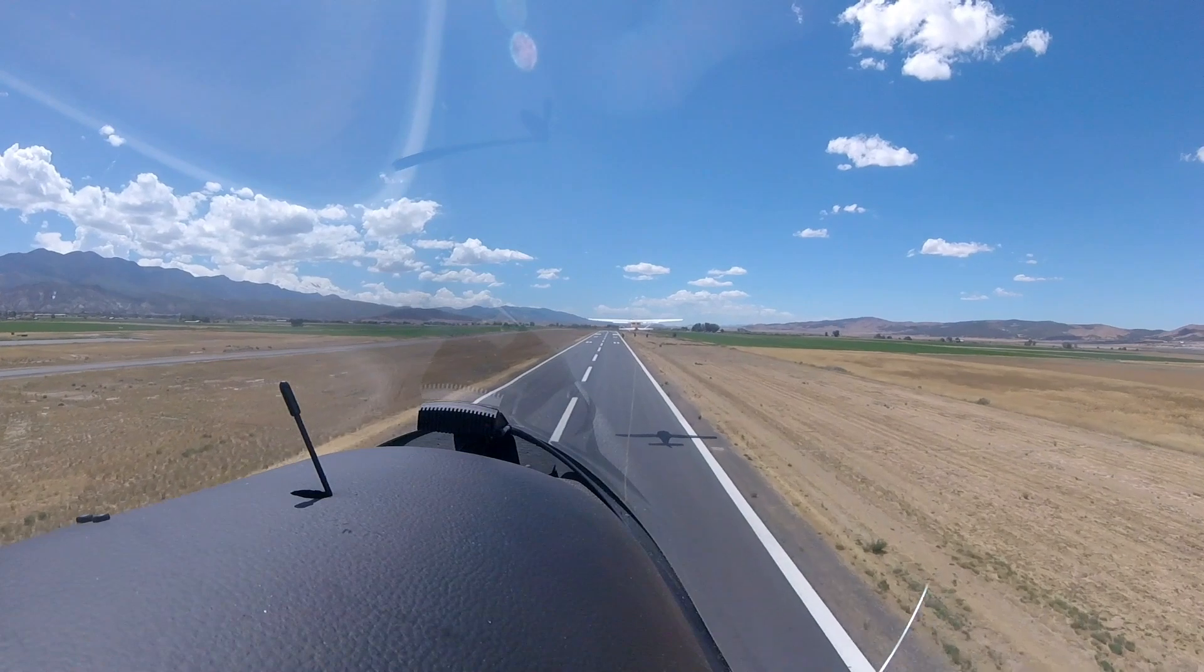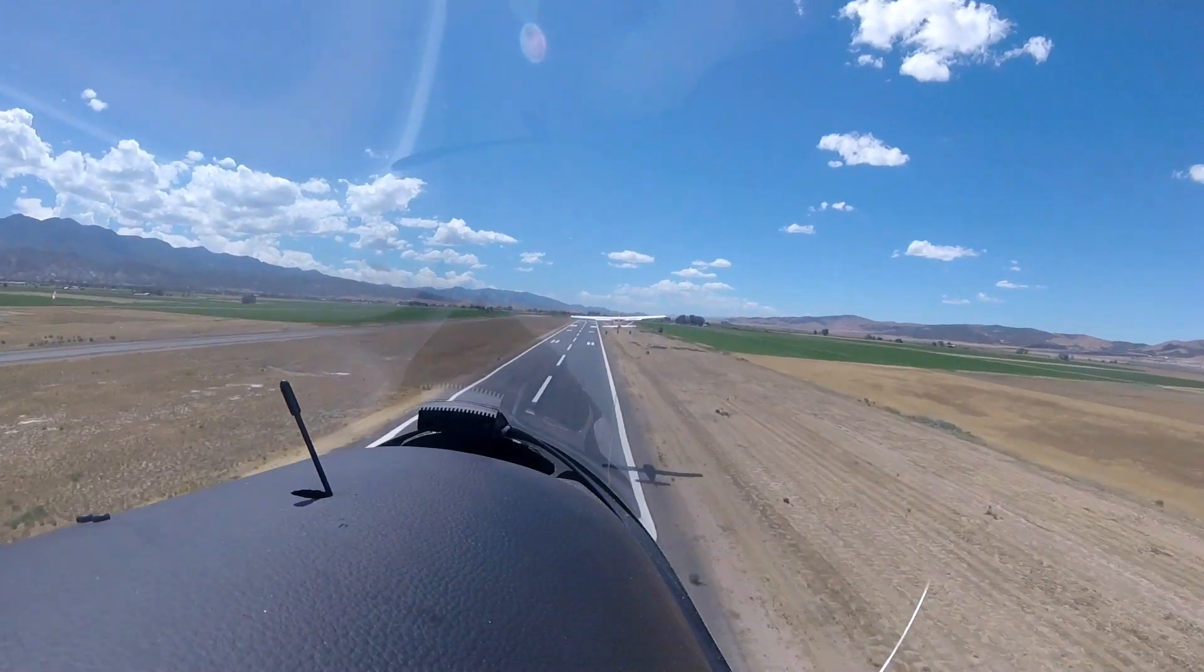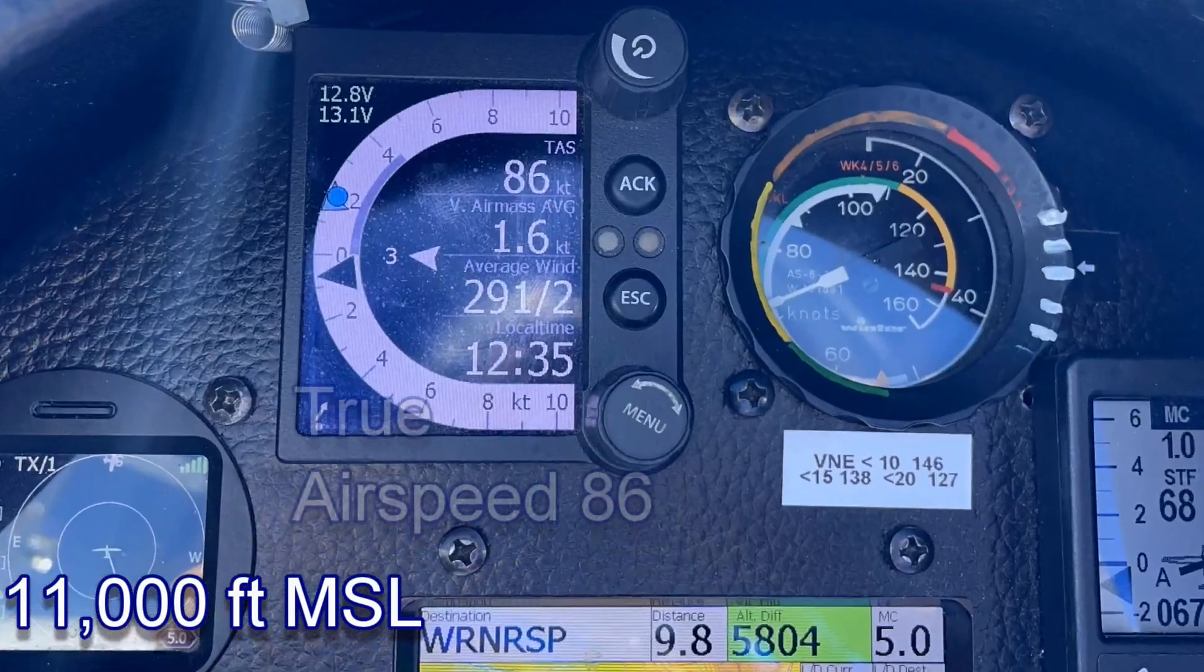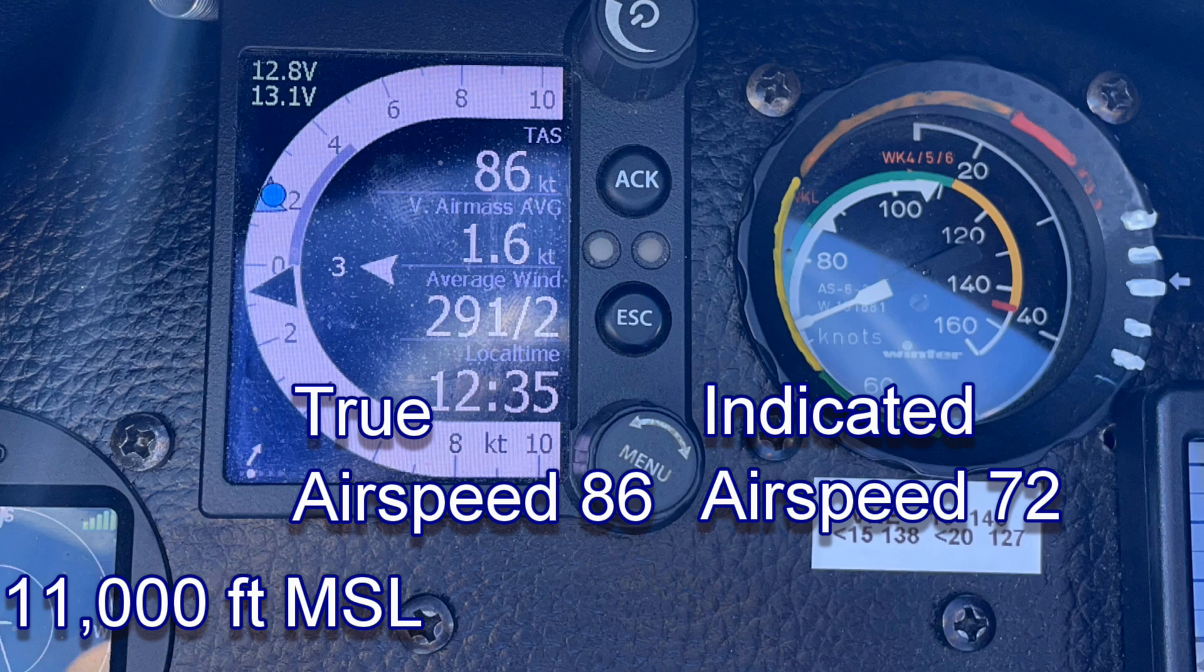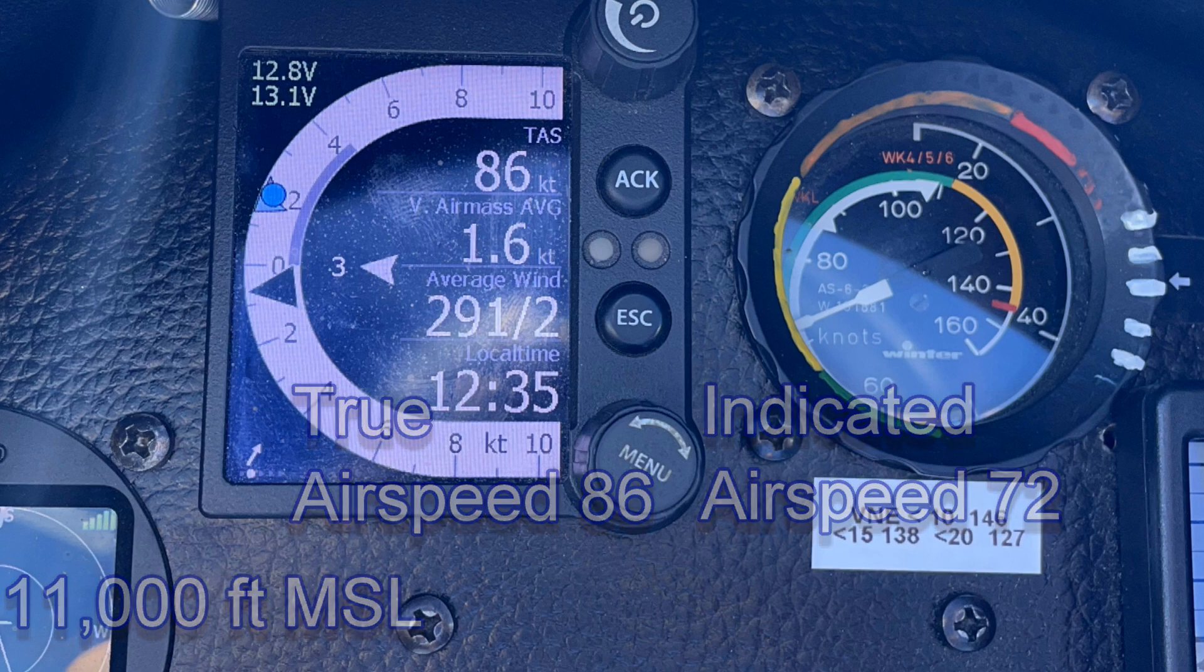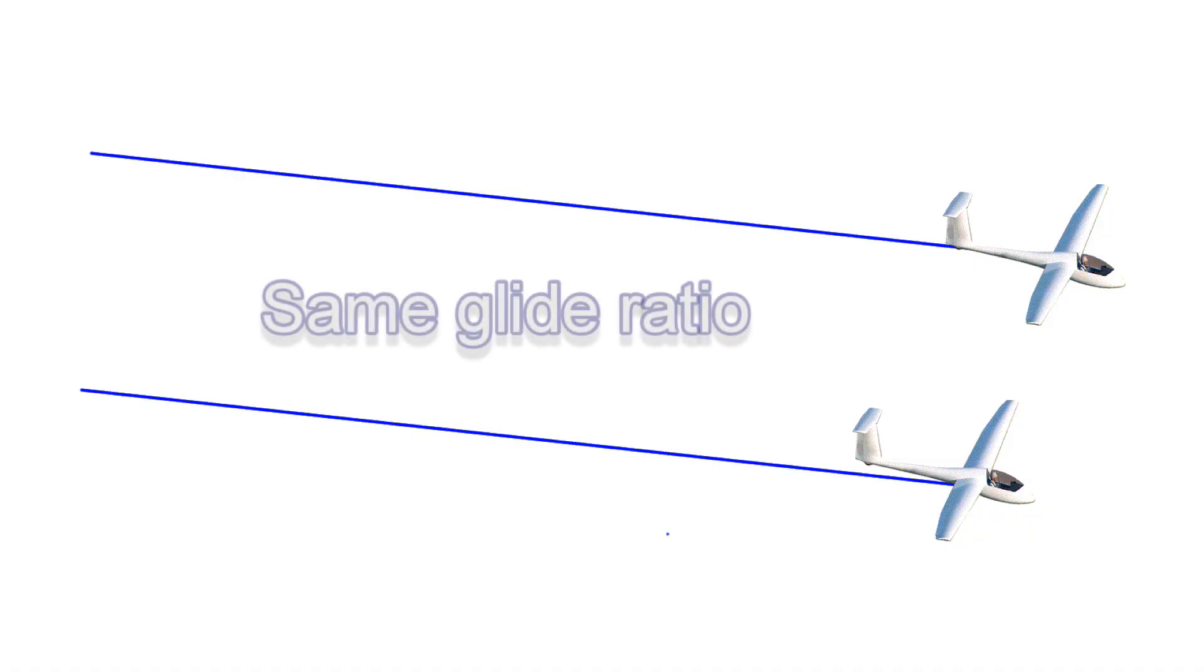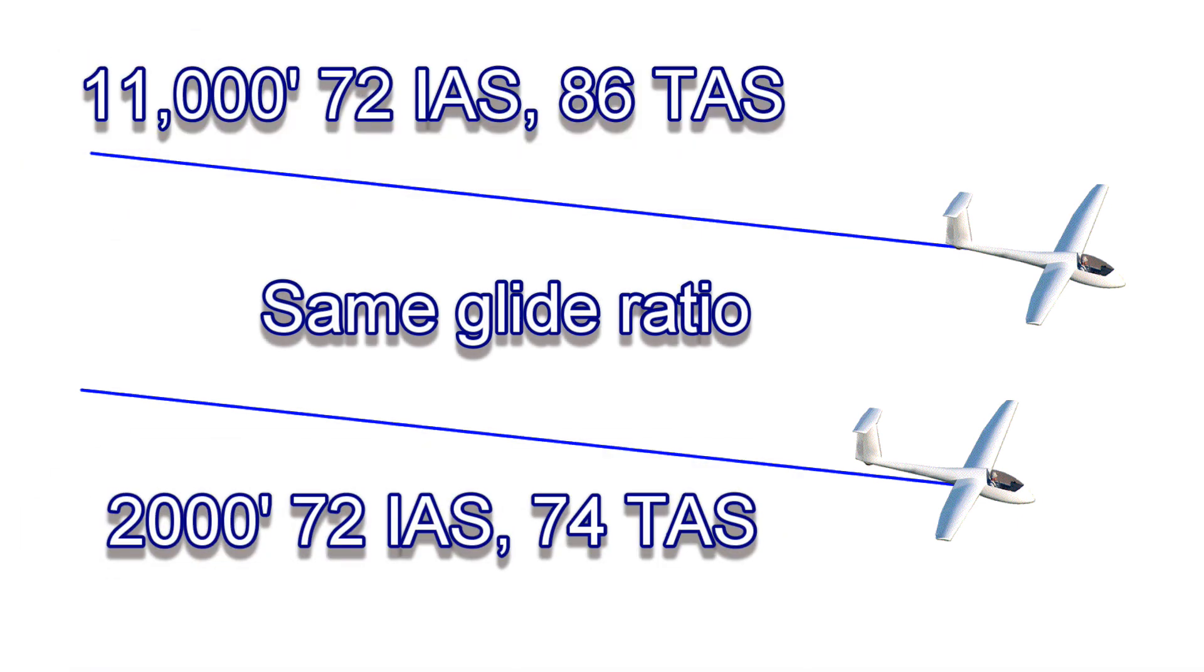As we go up in altitude, the air density decreases. To make up for this, we fly a faster true airspeed, which results in the same indicated airspeed for the same amount of lift. The nice thing is that both the lift and drag are both affected proportionally to the air density. So our glide ratio remains the same regardless of altitude. However, we will have a higher true airspeed to achieve that same glide ratio.